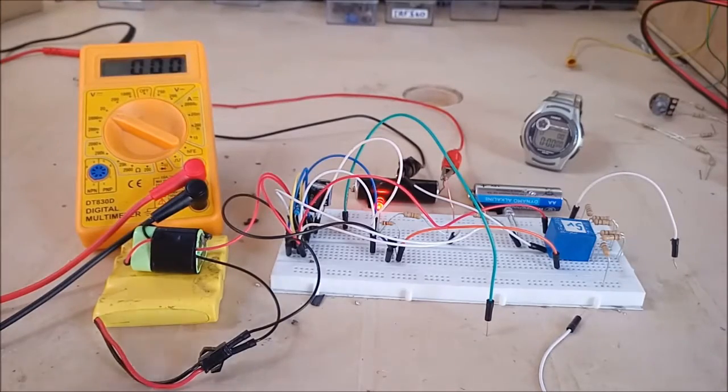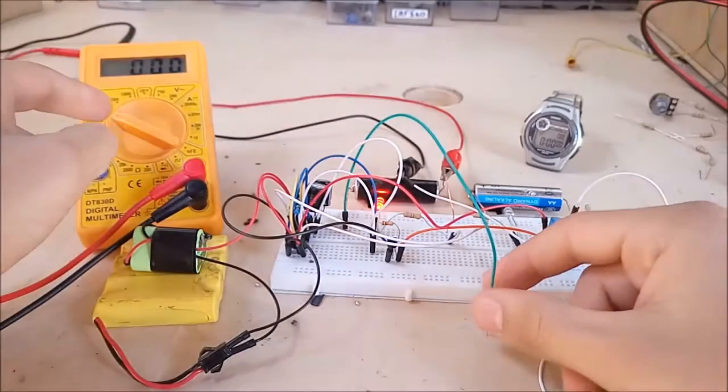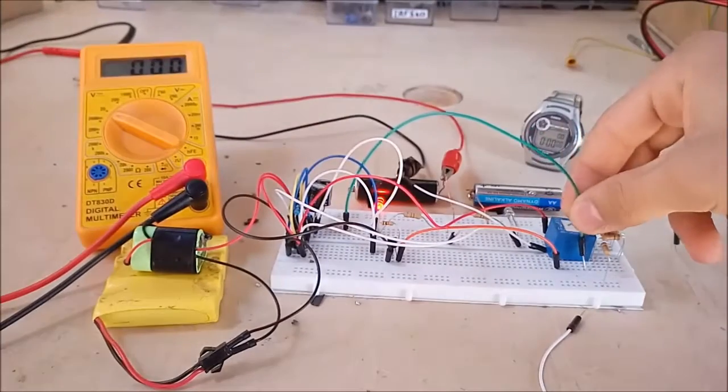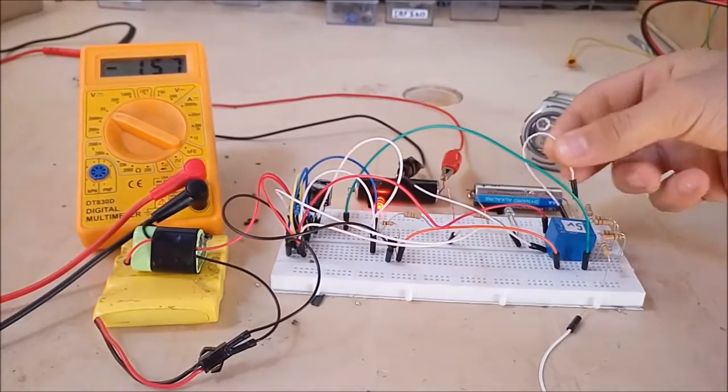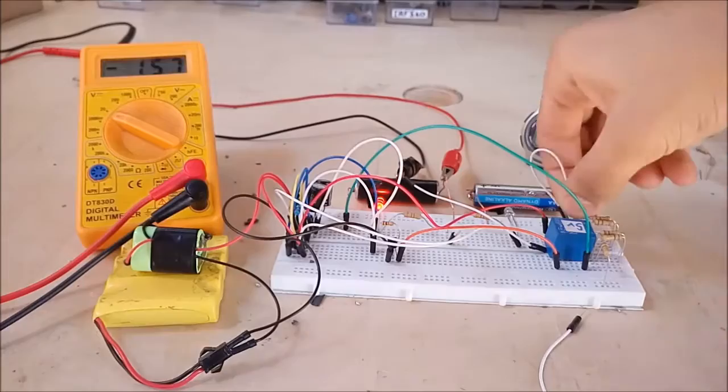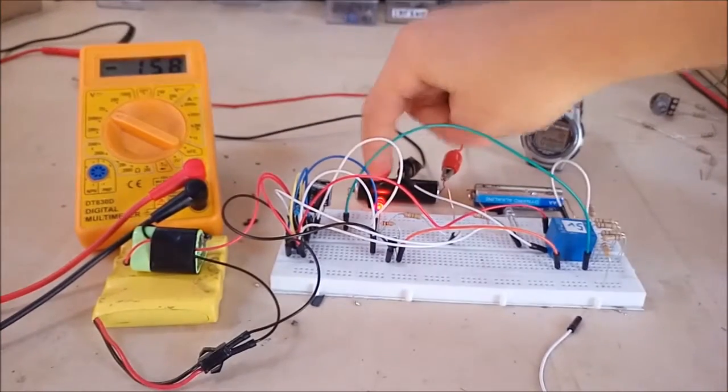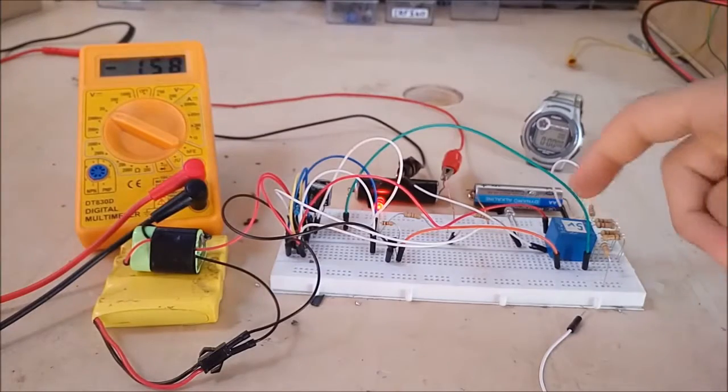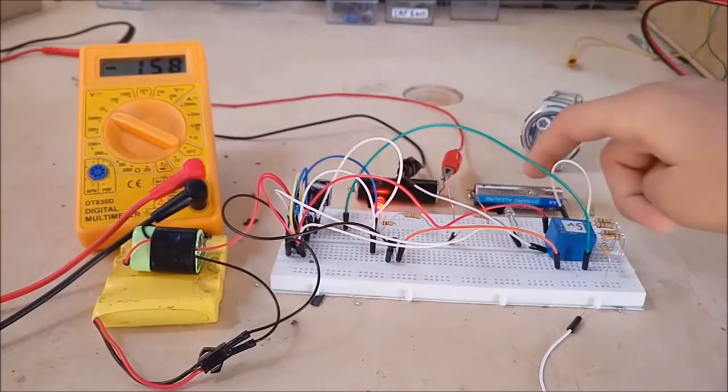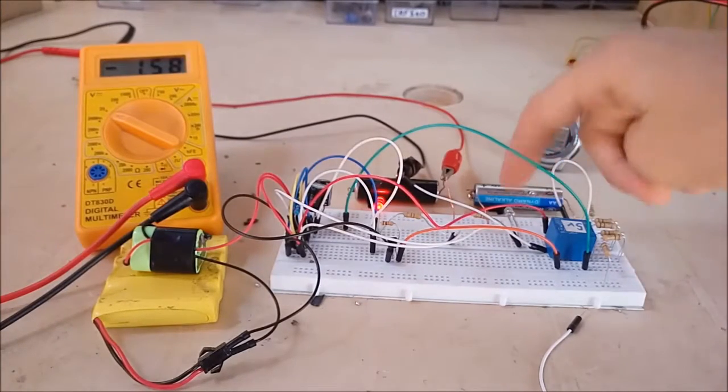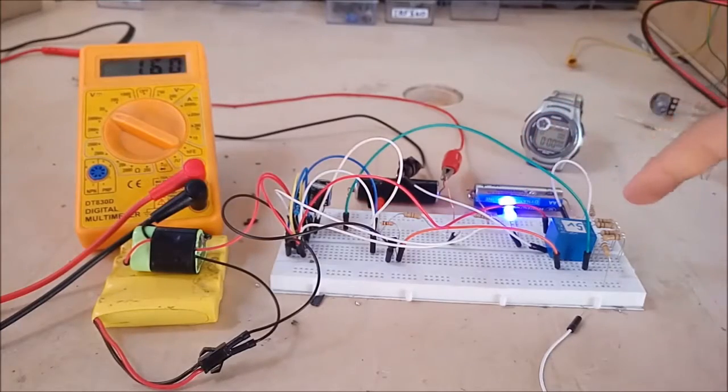I will connect it to here like this, and now the voltmeter is measuring voltage of this battery because the light is lighting to here. And now the relay will switch the voltmeter to the other battery and the LED will light on this one. As you can see, it switched and the other battery has a higher voltage.